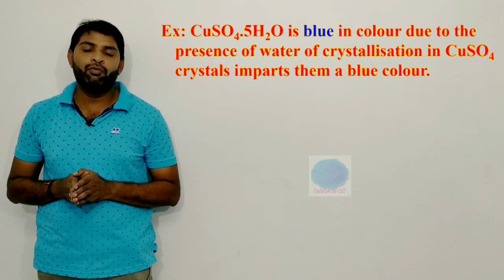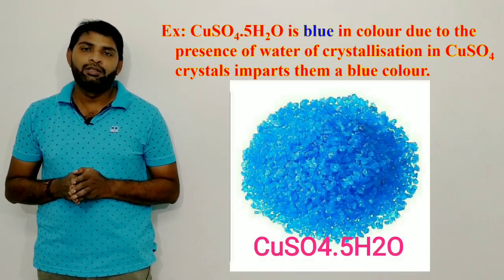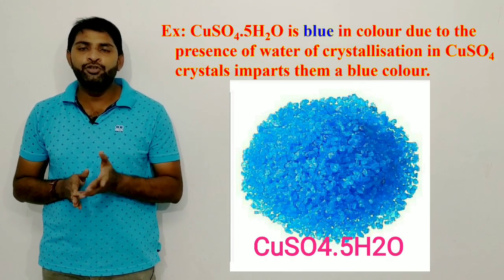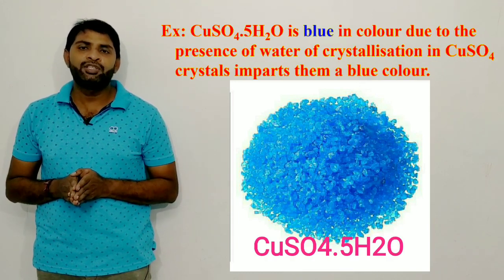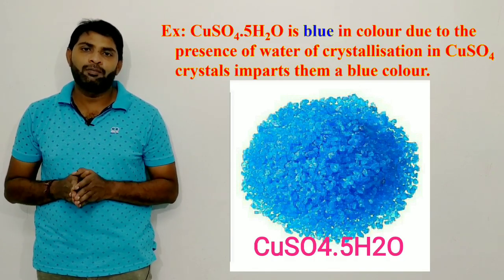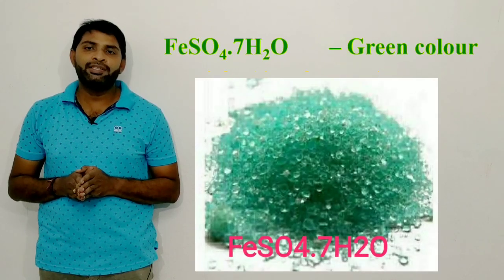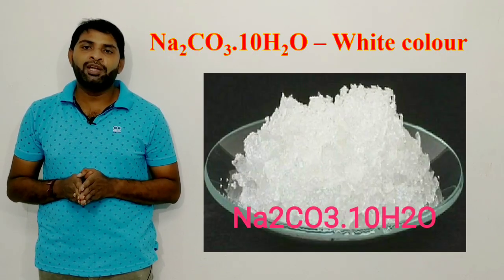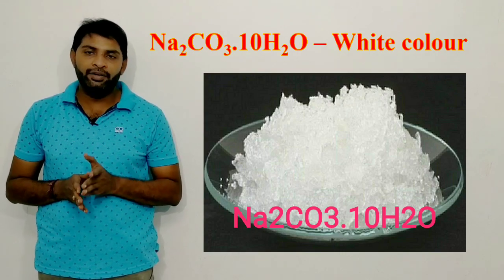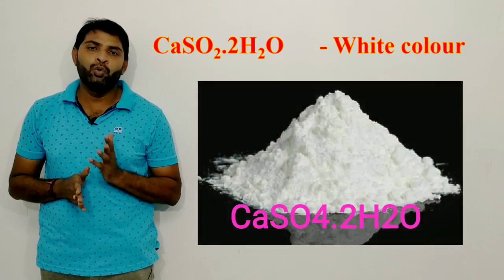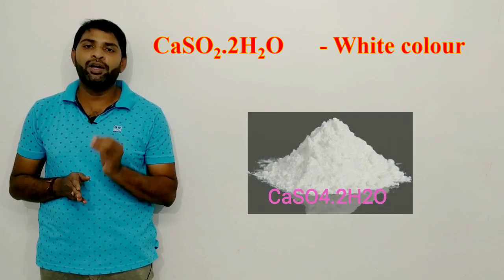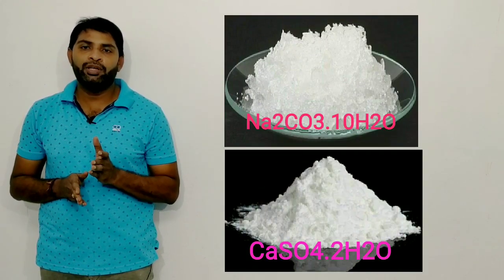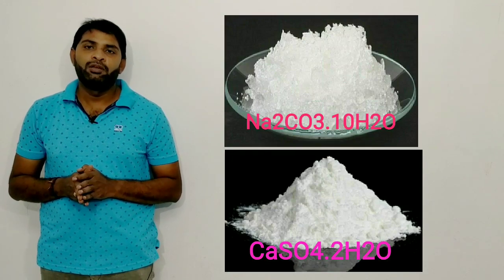For example, CuSO4·5H2O is a hydrated salt — it is blue in color due to the presence of water of crystallization in CuSO4 crystals. Similarly, FeSO4·7H2O, ferrous sulfate heptahydrate, gives a green color. Na2CO3·10H2O, sodium carbonate decahydrate, is white in color. CaSO4·2H2O, calcium sulfate dihydrate, is also white in color.